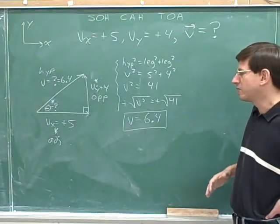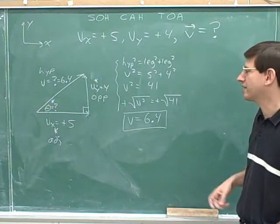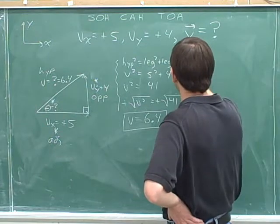Now we're not done. We're not done because all we figured out is the magnitude of the overall vector. We haven't figured out its direction, indicated by its angle. So now we have to figure out that angle.